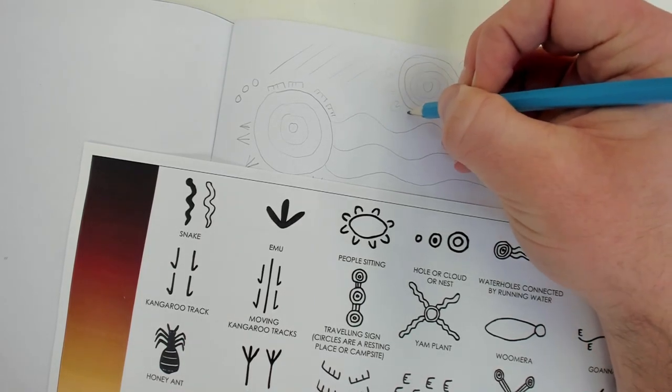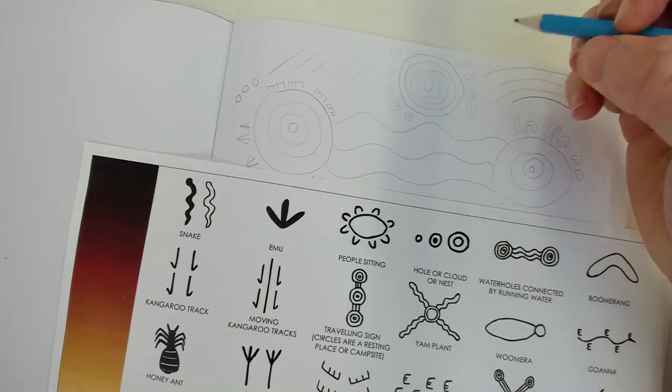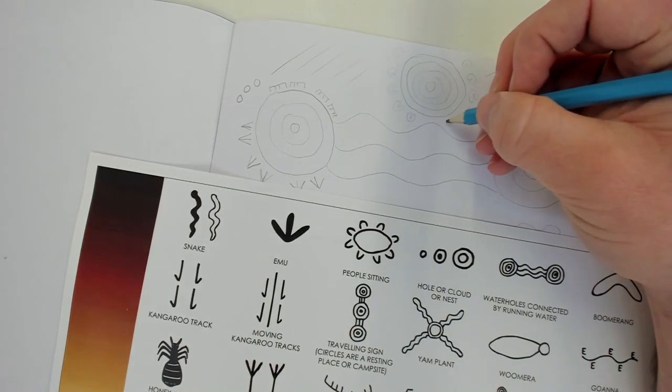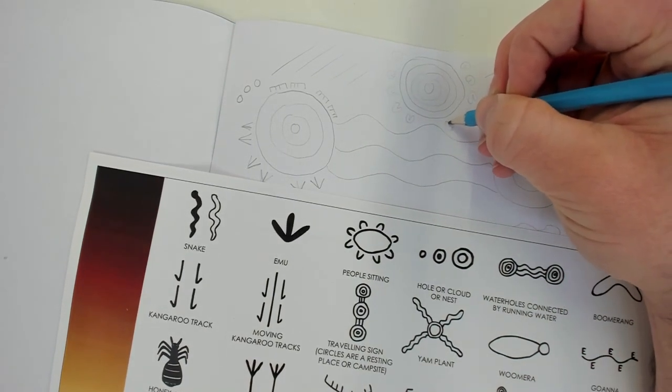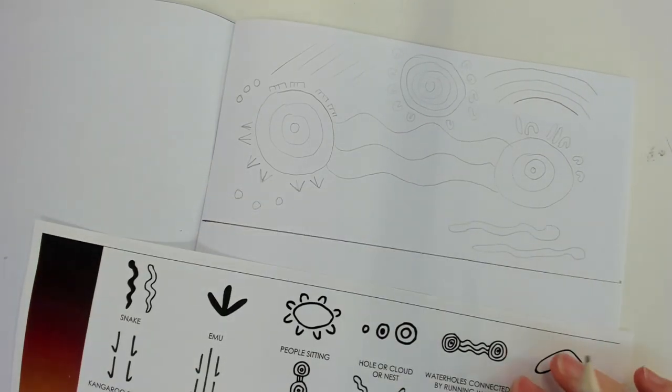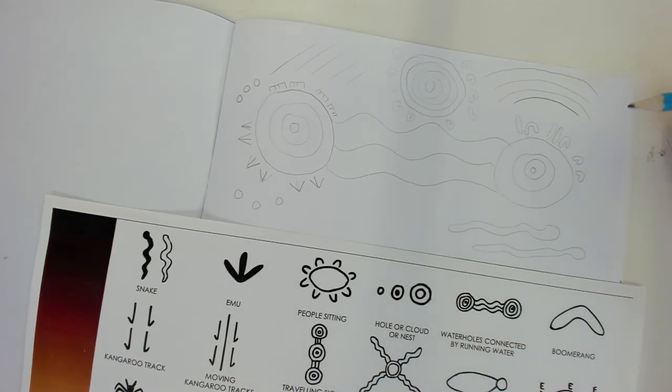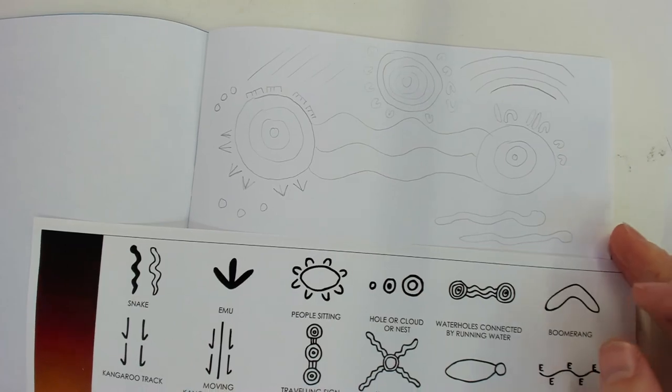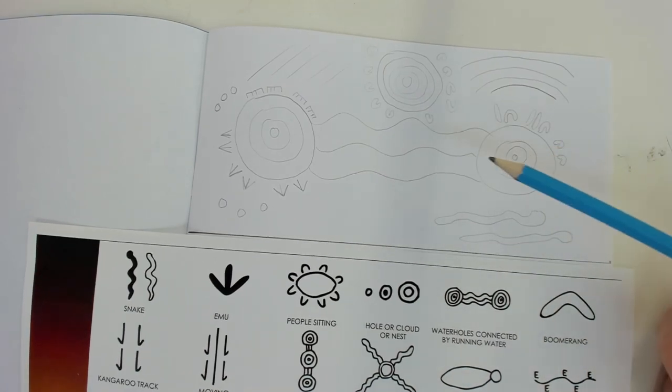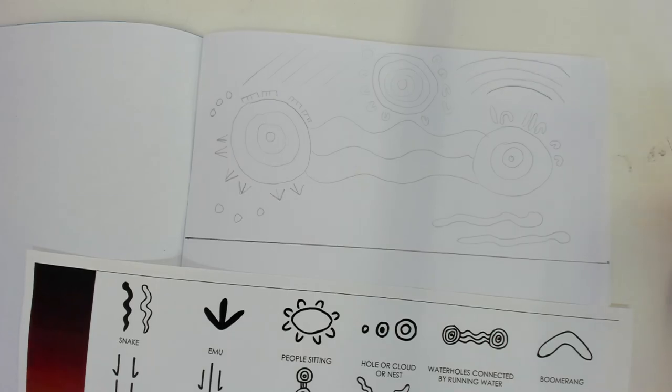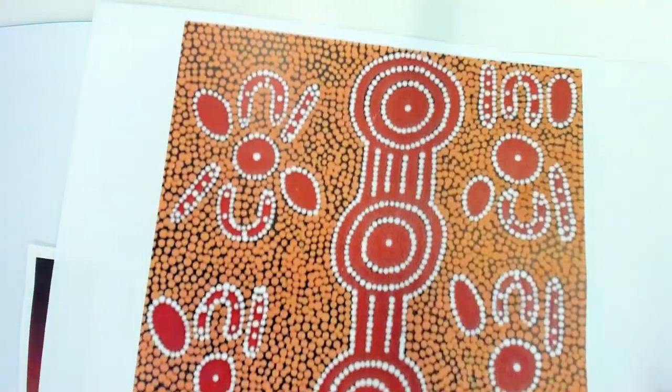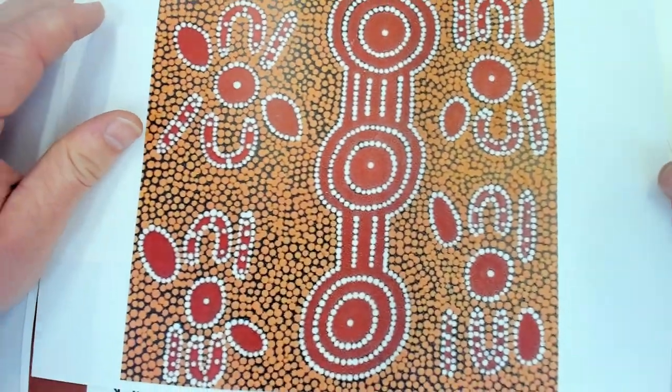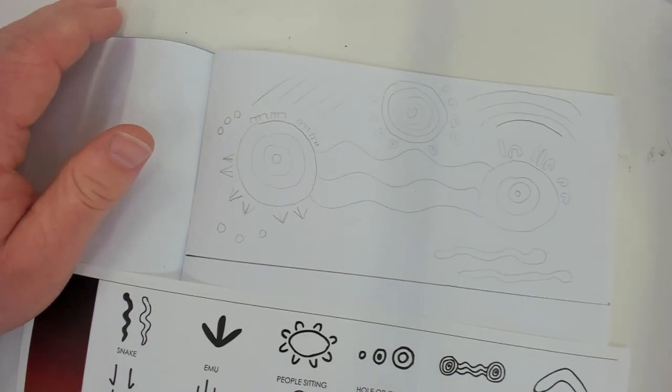What I want you guys to do is create your own stories. What these people might be doing. Are they going on a hunt? Are they getting some water? Are they just minding their own business? It's up to you. But I want to see that you've used these symbols. Took inspiration from some Aboriginal paintings. And create your own storyboards.